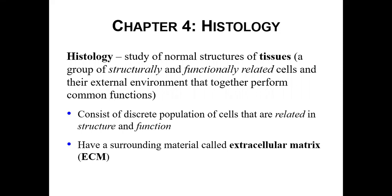A couple of main points about tissues: they usually consist of a discrete population of cells that are related — they have similar structure and similar functions, working together to complete some common function. They usually have some kind of surrounding substance called an extracellular matrix, which helps to support the cells, provide nutrients, and carry out different functions for the tissue cells.